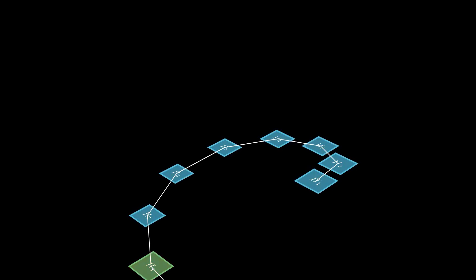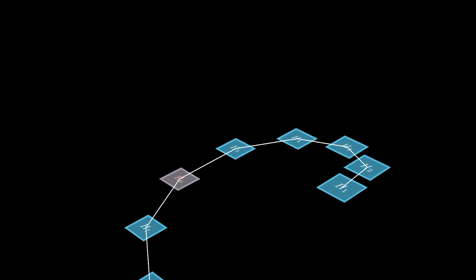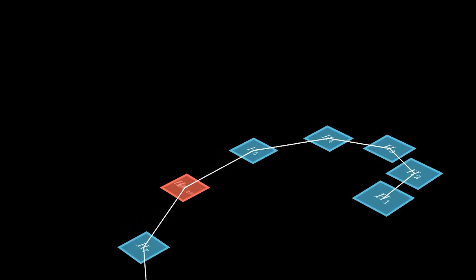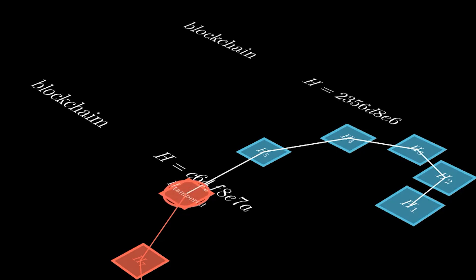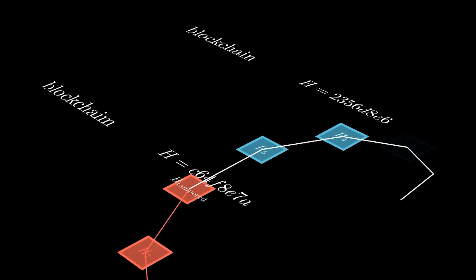This security relies on the avalanche effect, where even a tiny input change drastically alters the hash, a principle discovered by Horace Feistel. Watch what happens when we change one letter in blockchain. The hash completely transforms, breaking the chain.